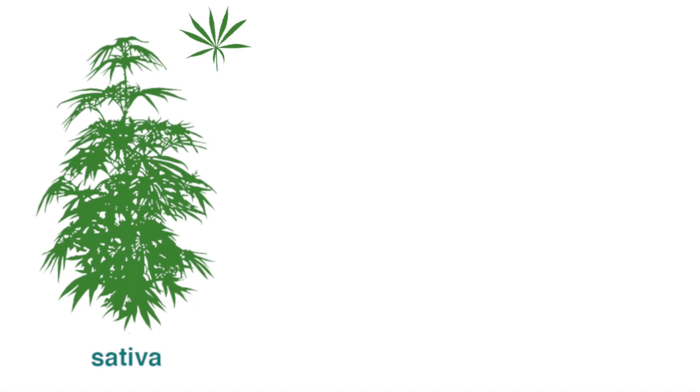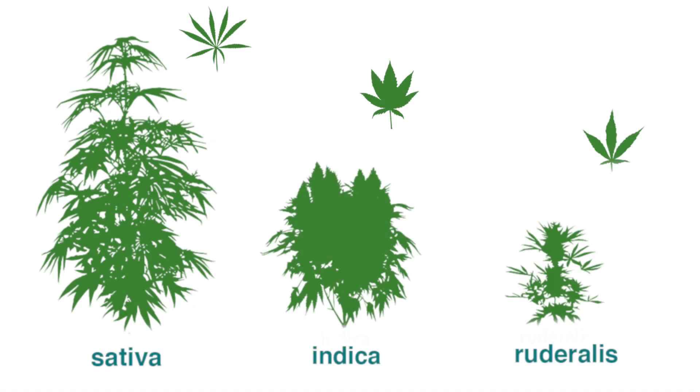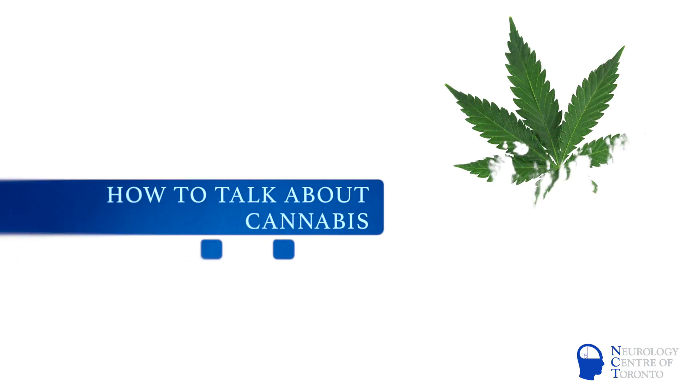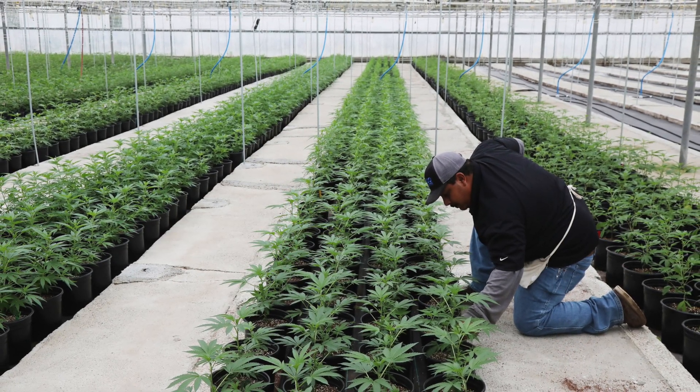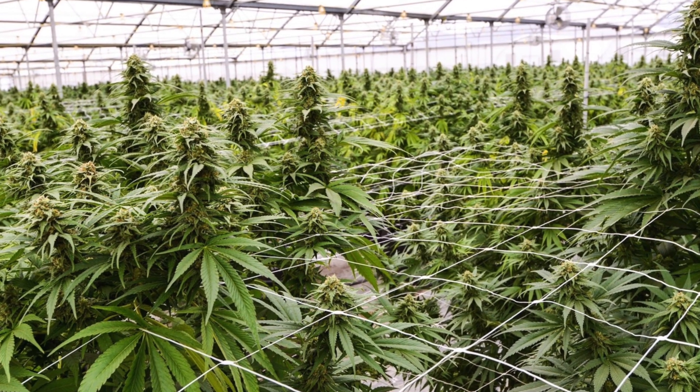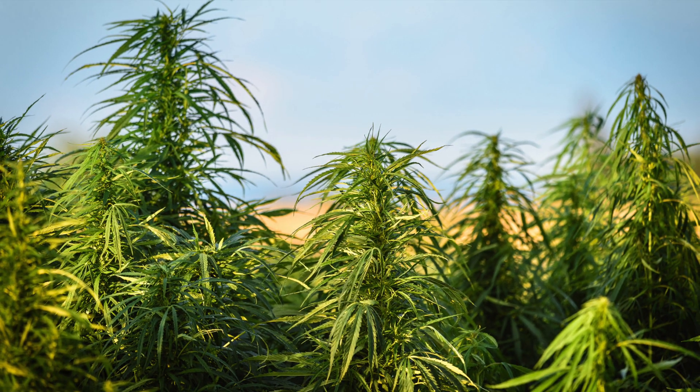These different appearances classify cannabis into three species: sativa, indica, and ruderalis. Over the last few decades, due to the prohibition on cannabis, there was a need to create plants with high THC that could grow fast indoors and in cold climates. This led to interbreeding between the different species and the creation of hybrid plants containing a mixture of sativa and indica characteristics. The hundreds of different hybrids of cannabis are commonly referred to as strains, but the proper term is chemical variety, or chemovar.